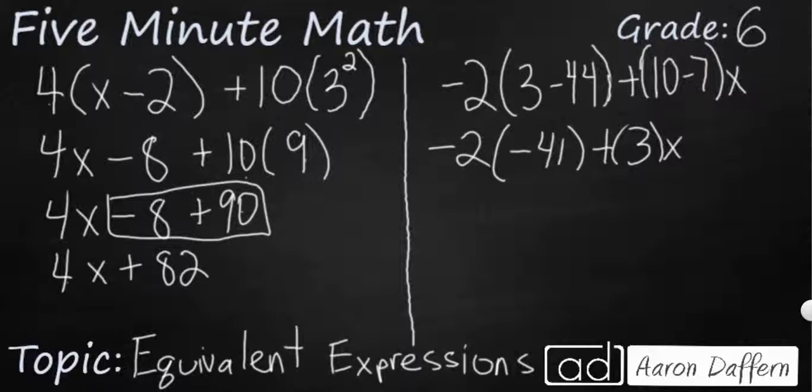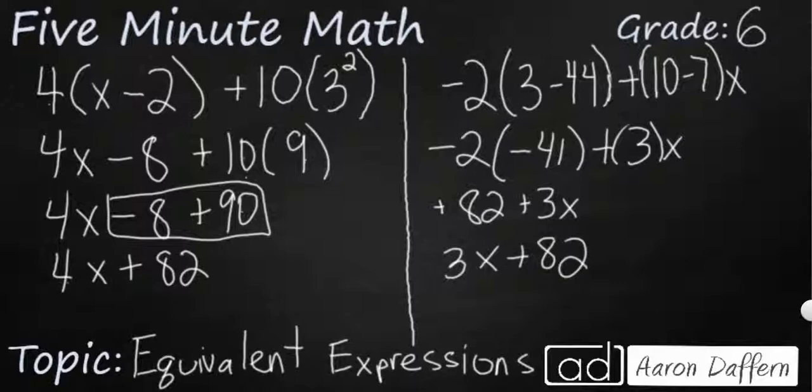Well, we have negative 2, parentheses, negative 41. So that's just going to multiply to negative times negative makes positive. So that's going to be 82. Looking good so far, we have a positive 82 here. We have a plus 3x. So if we rearrange it, we end up having 3x plus 82. And you see that we are close, but these expressions are not equivalent because this is 3x and this is 4x. So we can say they are not equivalent.